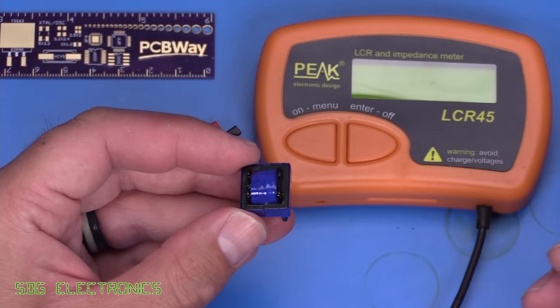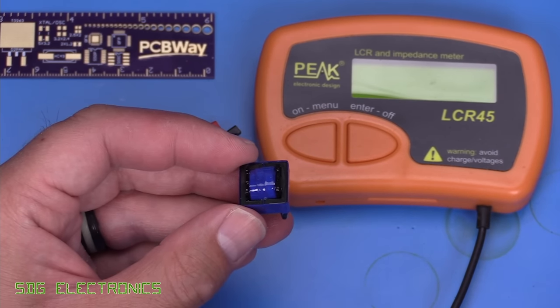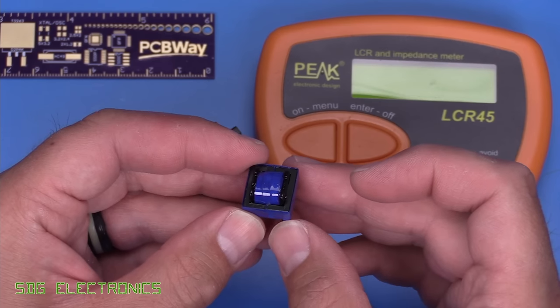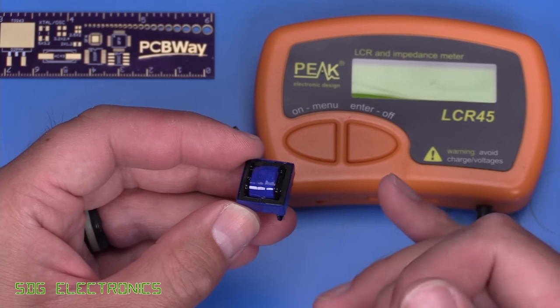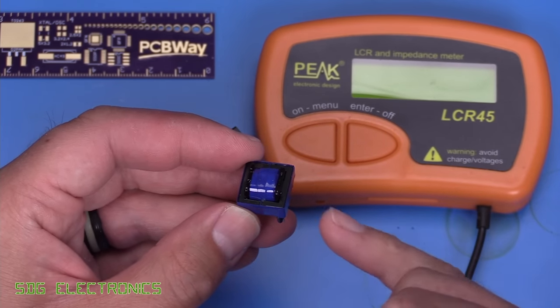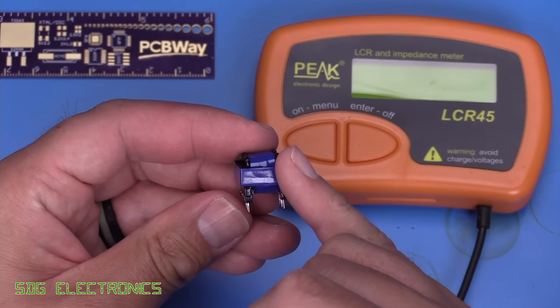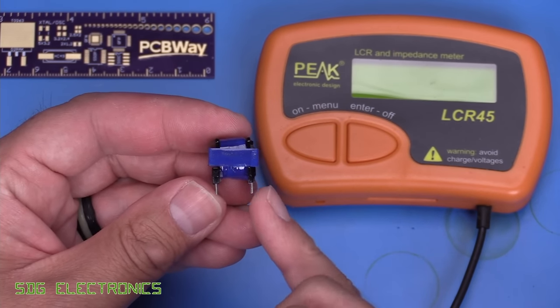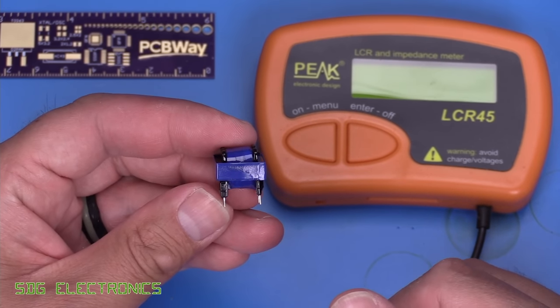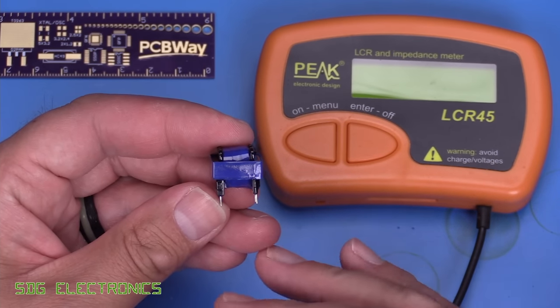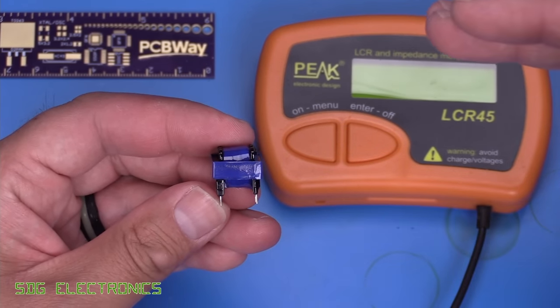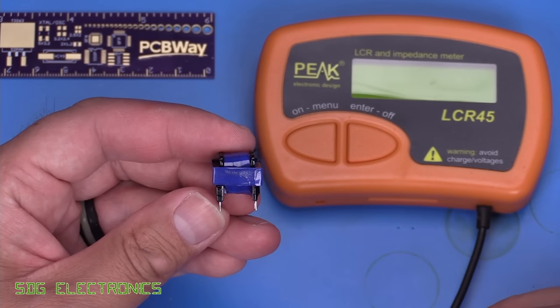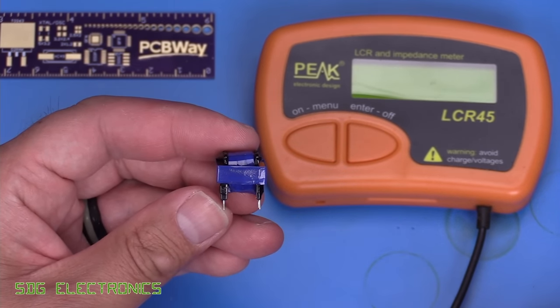Now, ideally, we'd have a high potential tester, a high pot tester that could test this at 3000 volts. Unfortunately, I don't have one of those. But I do have a multifunction tester for electrical installations that will test at 1000 volts. And what we will do is test between the primary and the secondary windings. And technically, there should be basically infinite impedance between those two, up until the point where the voltage goes high enough that it flashes over and breaks down the windings.